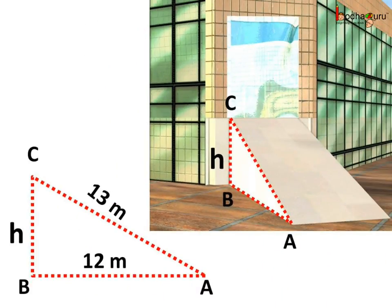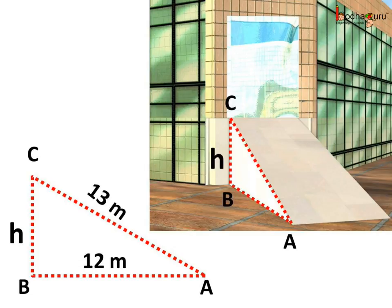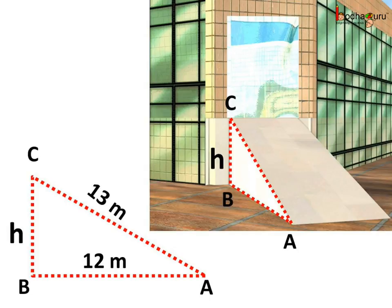Look at the plane — it is forming a right-angled triangle with the ground. Let us name this triangle ABC. The length of the slanting plane is 13 meters, and the distance between the starting of the plane to point B is 12 meters, which is the base of the triangle. Height is h and it is the side BC.